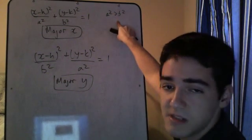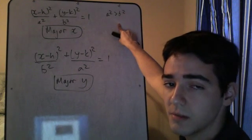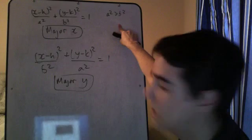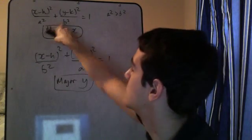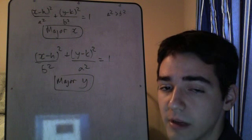A-squared will always be greater than b-squared. So how to be able to tell the difference or be able to tell which equation is major x or major y, you look here. So whichever number is larger, you look at what variable it is underneath.